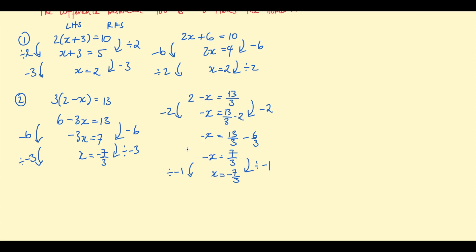In this example it was much faster to expand the brackets first rather than divide by the 3. Sometimes dividing by the coefficient makes sense and it's faster; sometimes it makes things much messier. A good rule of thumb is to avoid fractions where you can. If the coefficient divides the right hand side evenly, that's a good first step; if not, expand the brackets first.